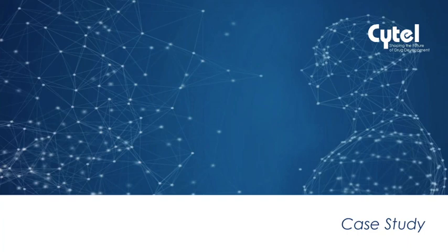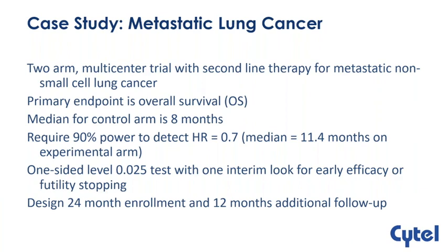We'll use a case study from the area of metastatic lung cancer — a two-arm multicenter study with second-line therapy for metastatic non-small cell lung cancer. The primary endpoint is overall survival, with median OS for the control arm of about eight months. We want 90% power to detect a hazard ratio of 0.7, representing an increase of about 3.4 months for the experimental arm. We'll use a one-sided alpha of 0.025 with one interim look, exploring stopping for efficacy or futility, with 24 months of accrual and 12 additional months of follow-up.